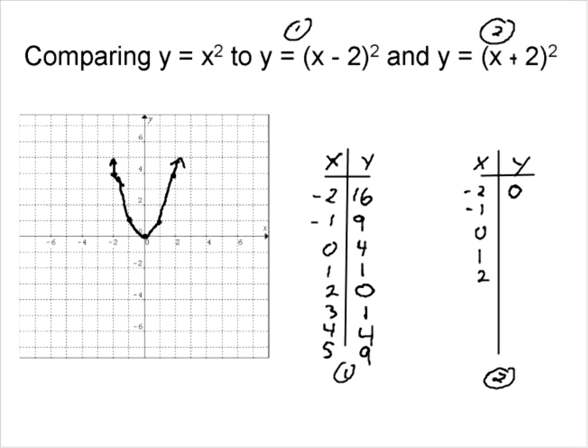0 plus 2 is 2 squared, which is 4. 1 plus 2 is 3 squared, we get 9. We notice we get the same pattern we had before.